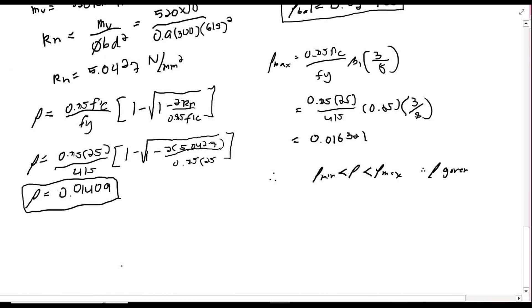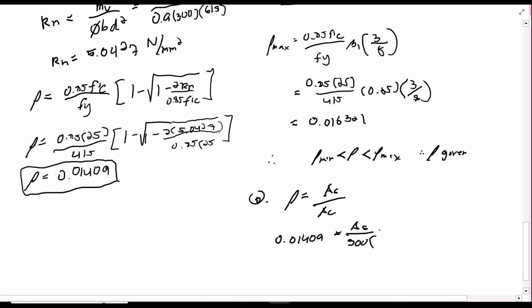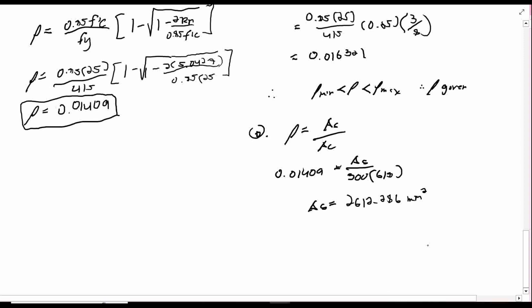Next question. Solve for the required area. By using our ρ, the required steel area, let's introduce the formula first. ρ equals area of steel over area of concrete. So 0.01409 equals the area of the steel all over 300 times the effective depth 618. So area of steel is 2612.286 mm squared.